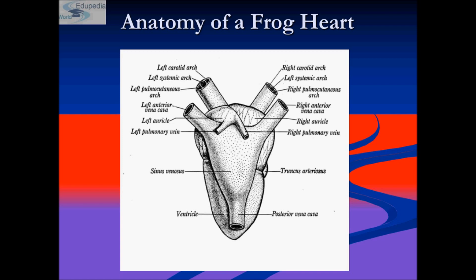Blood from the heart is carried to all parts of the body by arteries, forming the arterial system. Veins collect blood from different parts of the body back to the heart, forming the venous system. A special venous connection between the liver and intestine is called the hepatic portal system, while the connection involving the kidney is called the renal portal system.